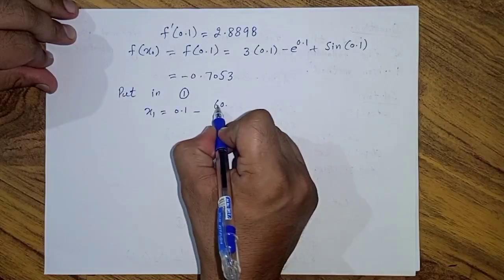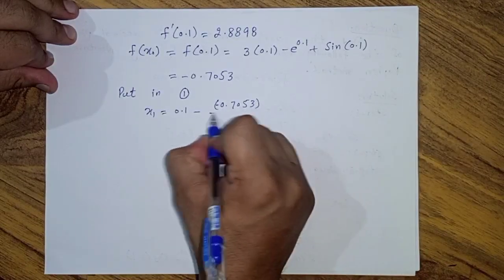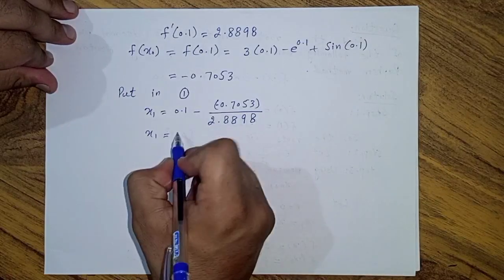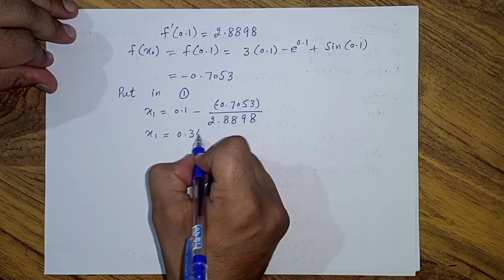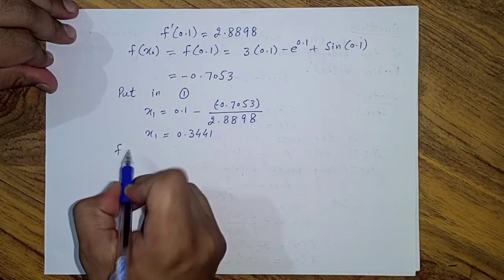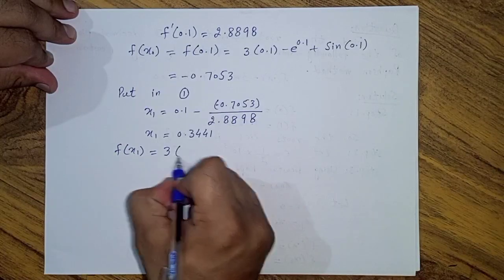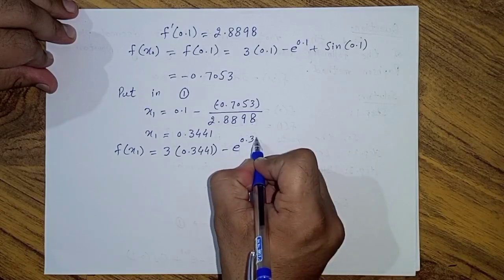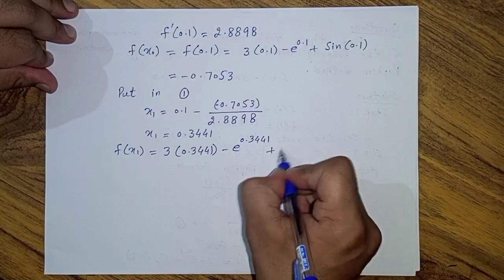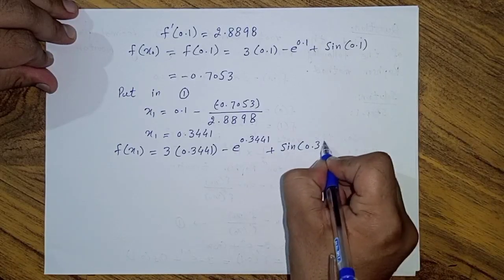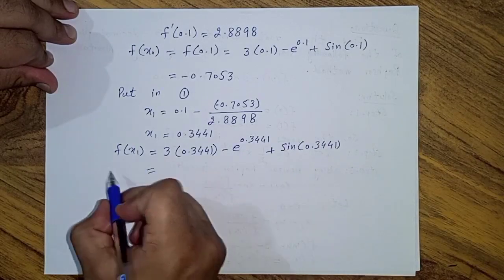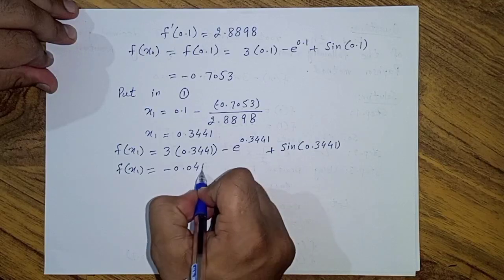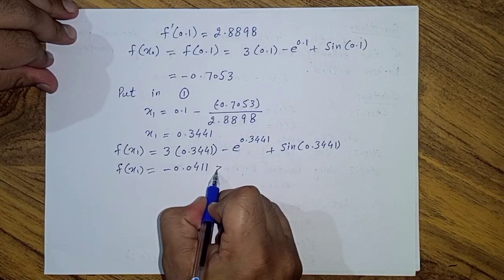Now f(x_1) = 3(0.3441) - e^(0.3441) + sin(0.3441). Solving this, we find f(x_1) = -0.0441. Since |f(x_1)| = 0.0441 is greater than epsilon = 0.0005, we go back to step 3.